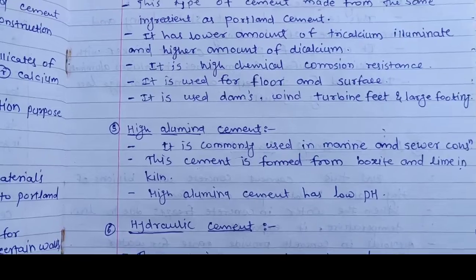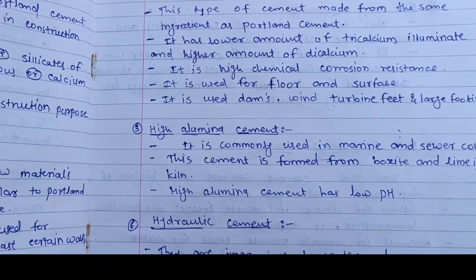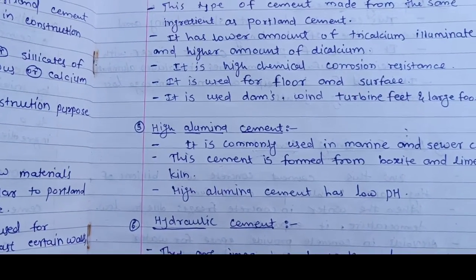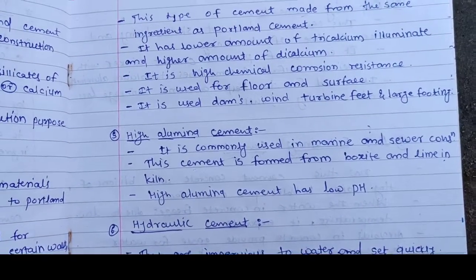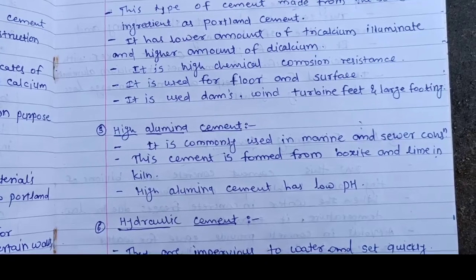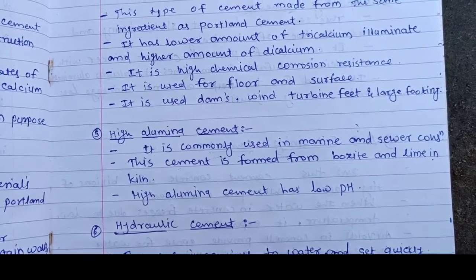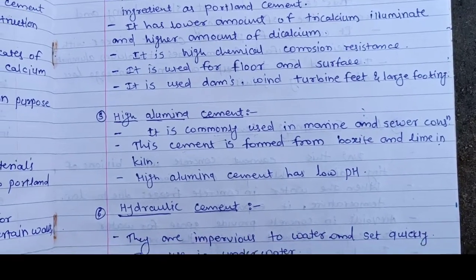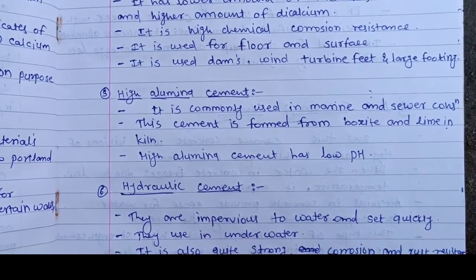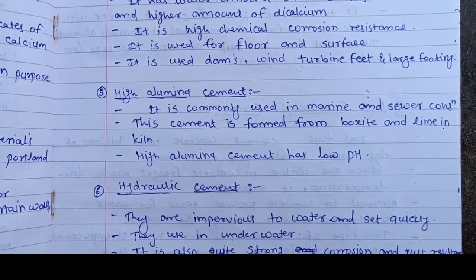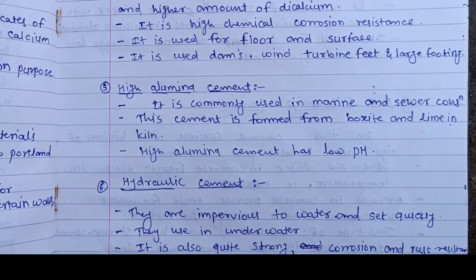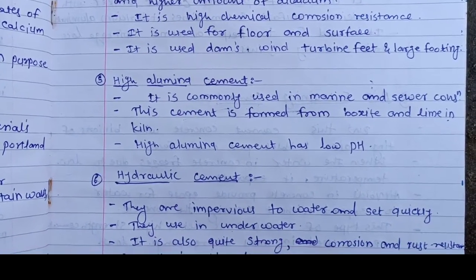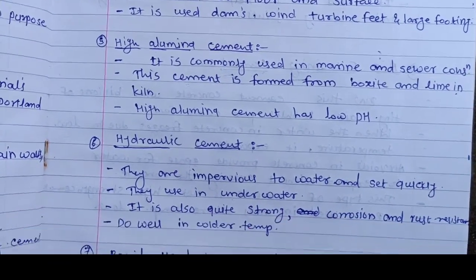The fifth type is high aluminum cement, commonly used in marine and sewer construction. This cement is formed from bauxite and lime in a kiln. High alumina cement has a low pH.